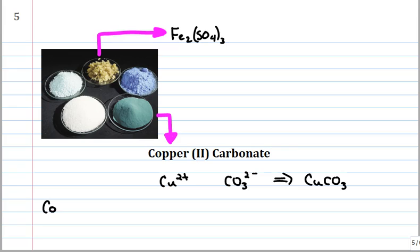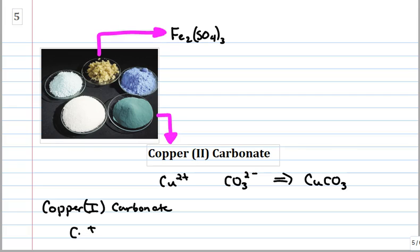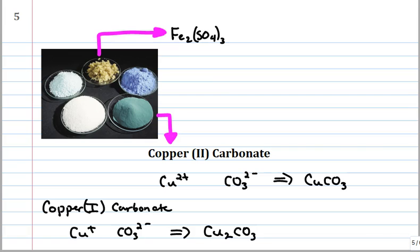What if you had copper(I) carbonate? The Roman numeral by the copper tells you which ion you have. Copper(I) is Cu+. Carbonate is CO3(2-). To get electrical neutrality, we would have to have Cu2CO3 — two copper(I) ions for every one carbonate ion. You don't put parentheses around the carbonate because you only have one carbonate ion in the formula.